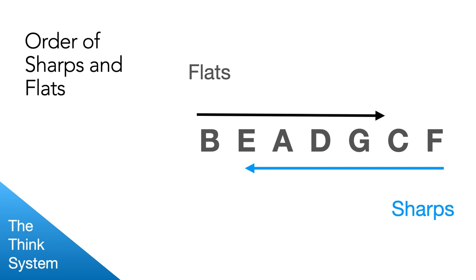Now you'll notice that the first four letters of this flat order spell the word bead. It makes it a little easier to remember. So it's bead, G-C-F. You can make something up to help you remember that. Greatest common factor is something a lot of my students use, but you can think of something else. Grandma can't fly, I don't know, something.